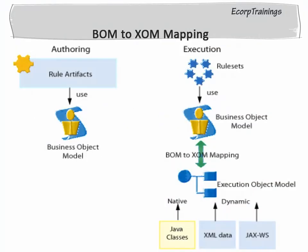Coming to business element to execution element mapping, every BOM element must have a corresponding XOM element. The correspondence between execution elements and business elements does not need to be one-to-one. If a business element originates from an execution element, then you do not need to explicitly specify a mapping. If a business element does not originate from an execution element, you need to specify a BOM to XOM mapping.